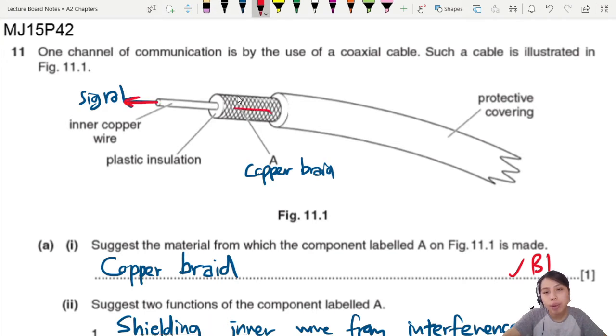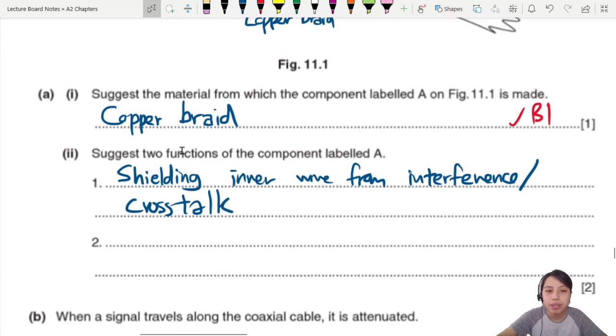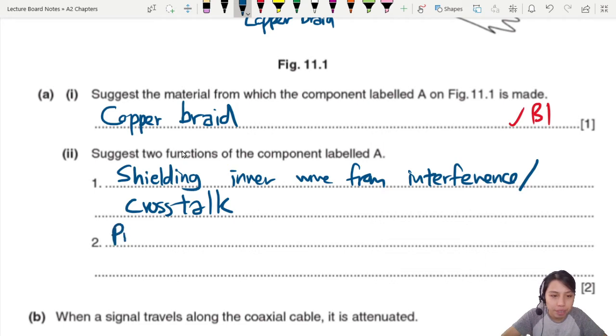Another function of this component. Signal must have two-way, right? So maybe the signal inside the copper wire goes this way. Then through the copper braid, it goes the other way. So it's a return path. You go here, you got to go there. Two ways. So we can say that this is a return path. Provides a return path.